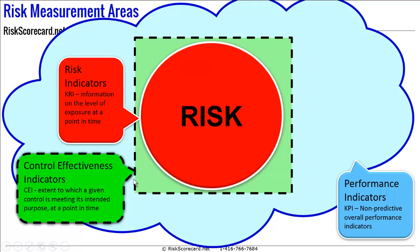You'll end up building controls around them to ensure that that risk-related activity does not occur anymore. So those are the three types: KRIs, CEIs, and KPIs.